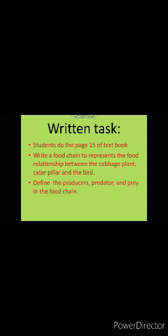For your practice, the first question is done by students in the book — do page 15 of the textbook; this is your book task. Number two: write a food chain to represent the food relationship between the cabbage plant, caterpillar, and bird — arrange these names in a proper food chain. Third question: define producers, predators, and prey in the food chain. This work is done in your notebooks.